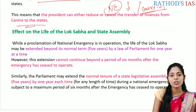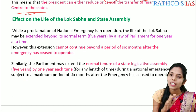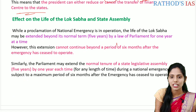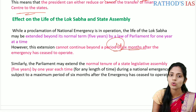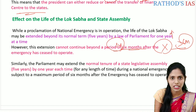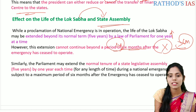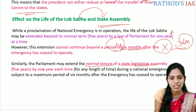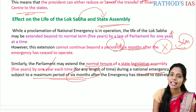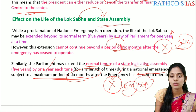The next effect is on the life of the Lok Sabha and state assembly. Whenever there is a proclamation of national emergency, the life of the Lok Sabha can be extended beyond its normal term by one year at a time. However, this extension cannot continue beyond six months after the emergency ceases to operate — within six months they should go for fresh elections. The same is applicable to state assemblies as well. Parliament may extend the normal tenure of the state legislative assembly by one year each time during national emergency, subject to a maximum of six months after the emergency has ceased to operate.